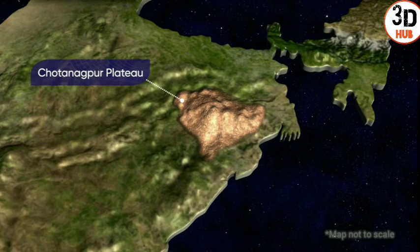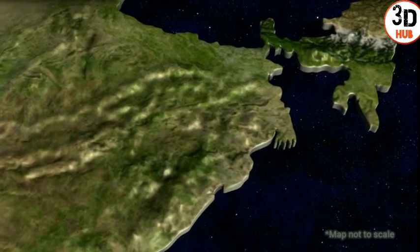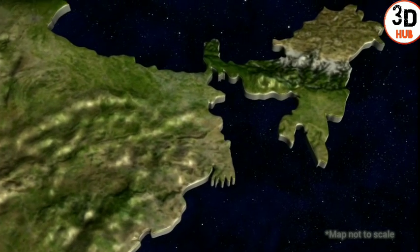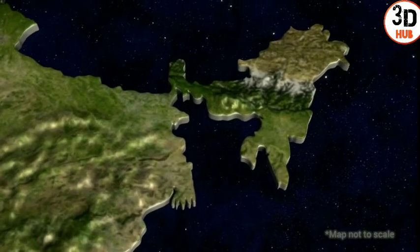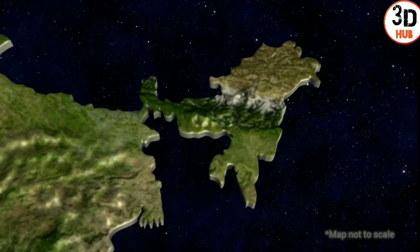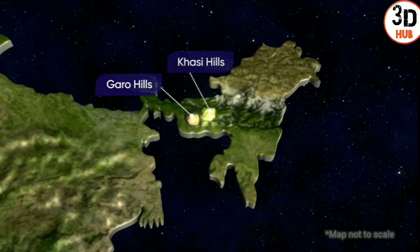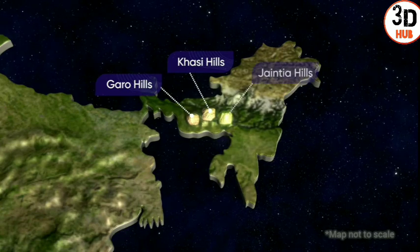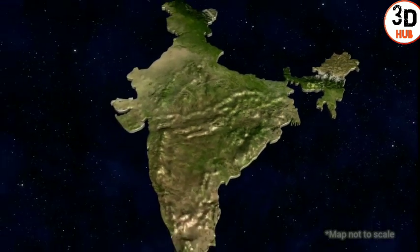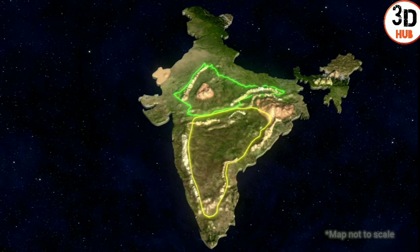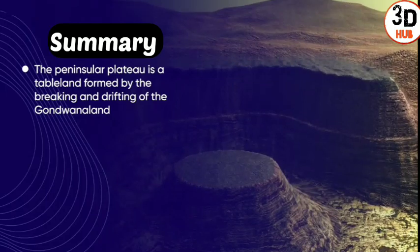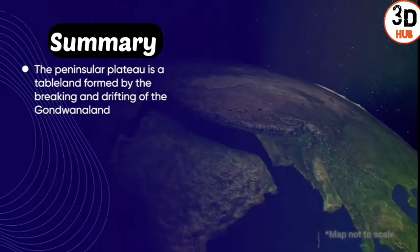The Deccan Plateau is separated by a fault from the Chota Nagpur Plateau and extends to the state of Meghalaya. In this section of the Peninsular Plateau, we can see three prominent hill ranges from west to east: the Garo, the Khasi, and the Jaintia hills. The Peninsular Plateau extends all the way to Meghalaya.